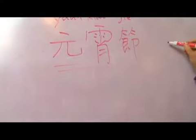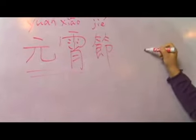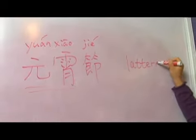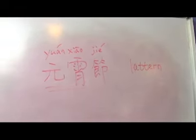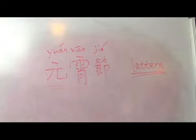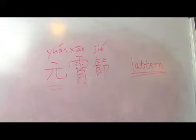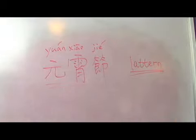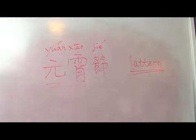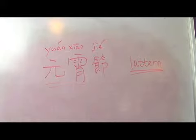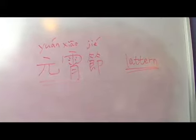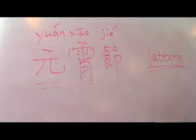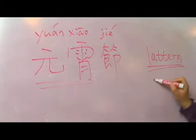The key words of 元宵节 are 'first' and 'lantern.' Because on that day the moon is full and bright, people would hang many lanterns outside, and then go out to enjoy and appreciate the lanterns. At the same time, they try to solve the riddles written on the lanterns.